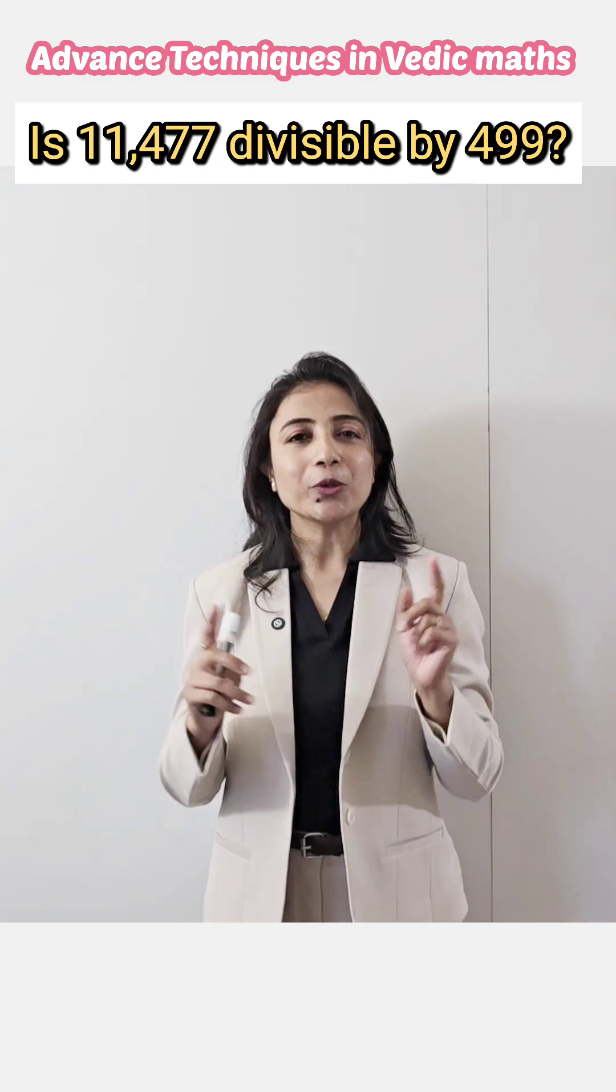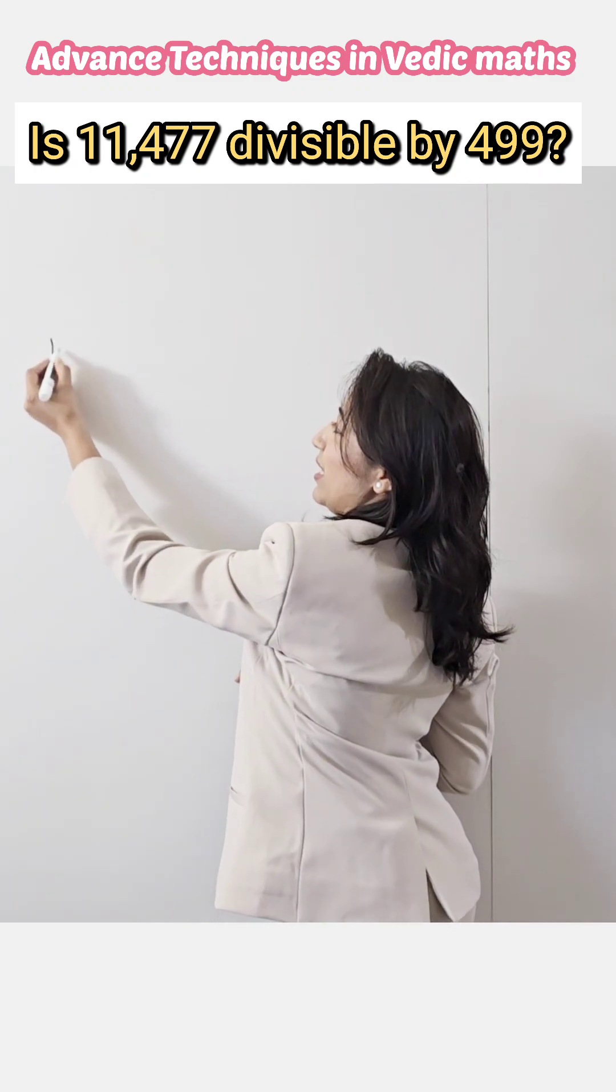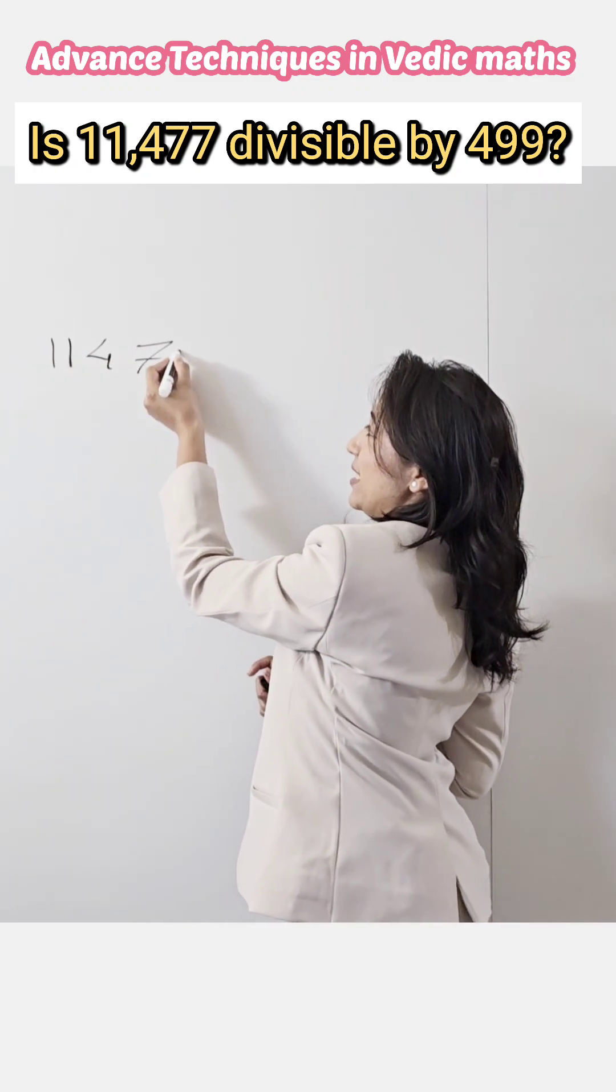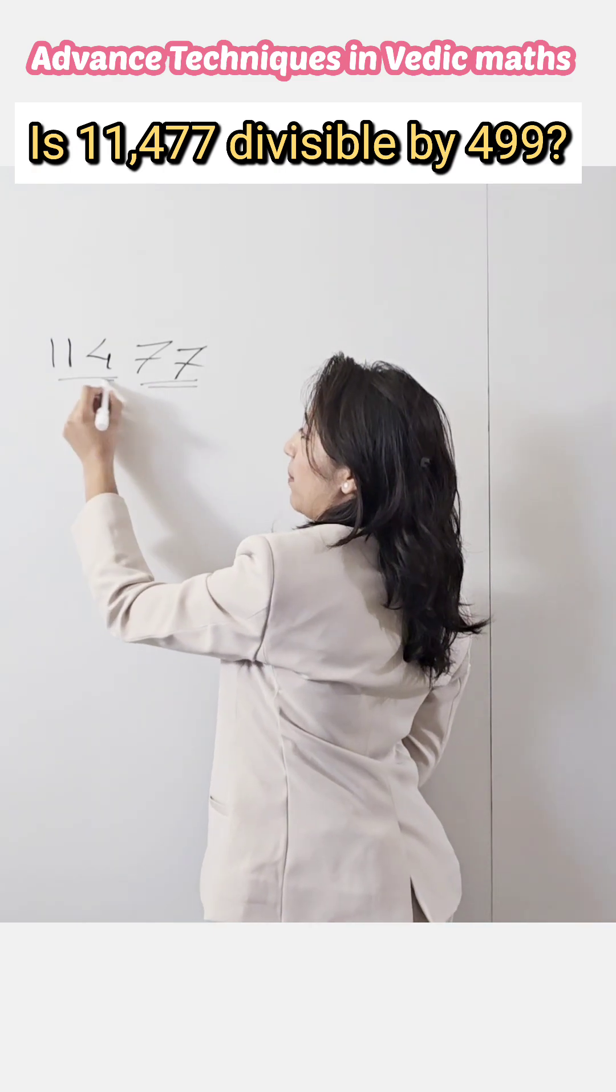But with the help of Vedic Maths trick, you can find the answer quickly. See, here our number is 11,477. Break this number into two parts: last two numbers and remaining part of the number.